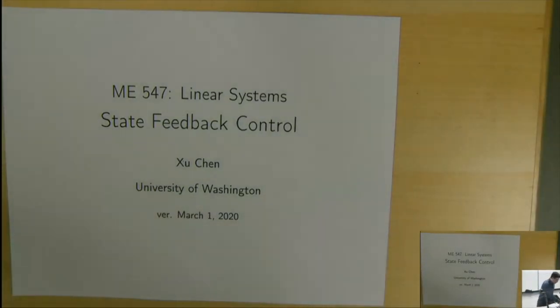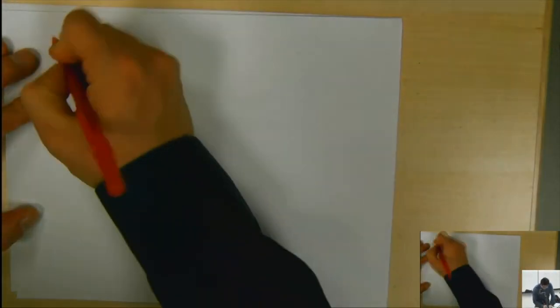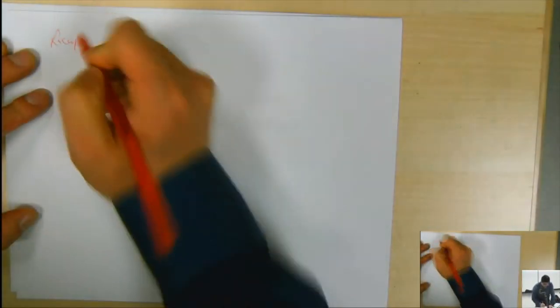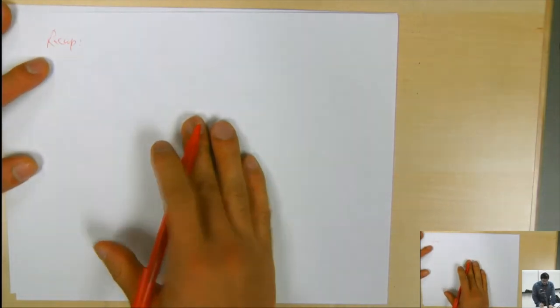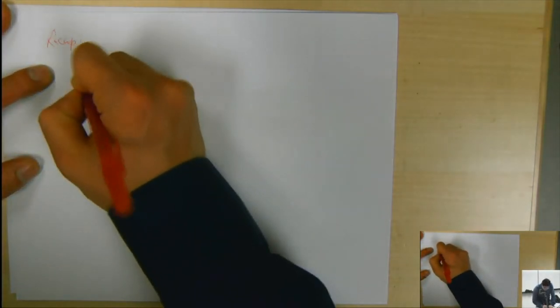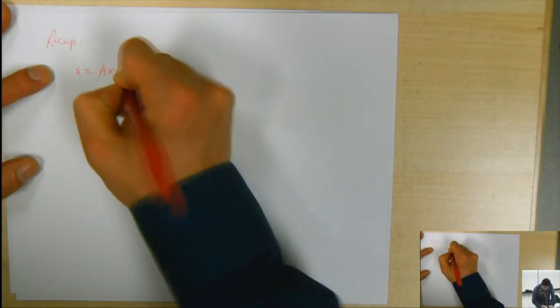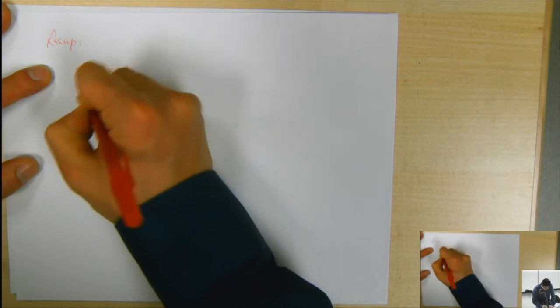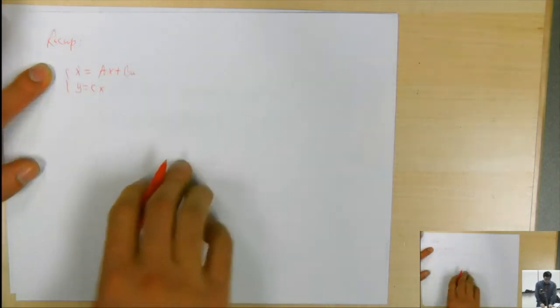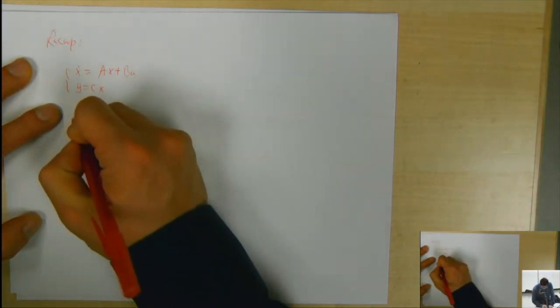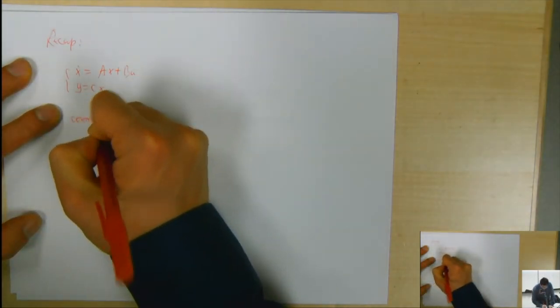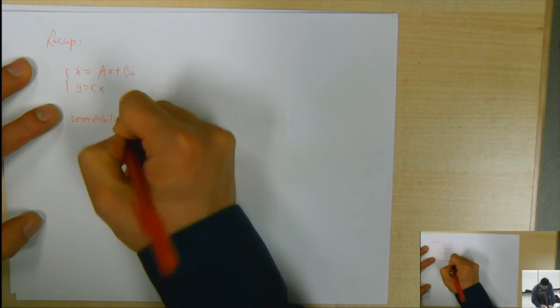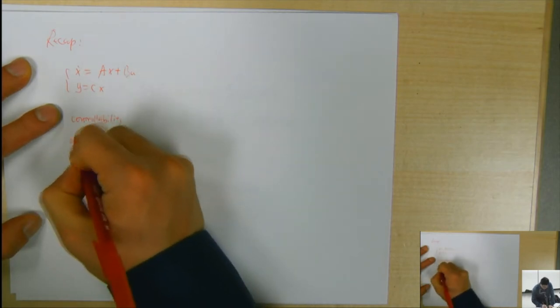So far, if we do a quick recap, we talked about state-space analysis, and then if we're given a state-space system, we talked about concepts of controllability and observability.